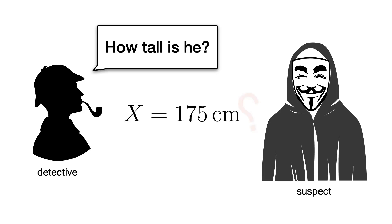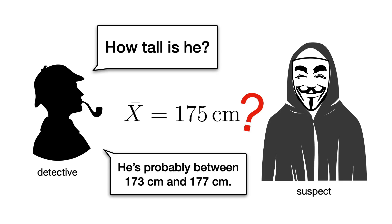The average height from your sample is 175 cm. But you know, deep down, that you are not 100% sure that's exactly the suspect's true height. People make mistakes, right? So, instead of just saying the suspect is 175 cm, you might say, I am pretty confident that the suspect's height is somewhere between 173 cm and 177 cm. That range, that's the confidence interval.